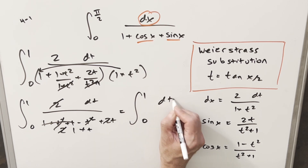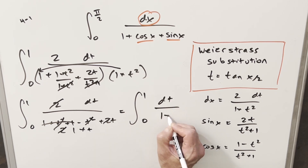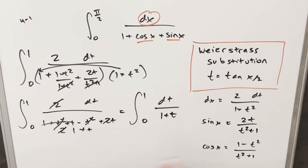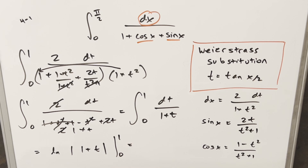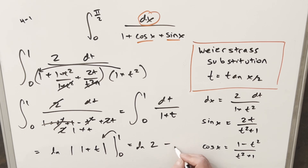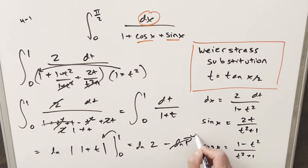So we're just integrating from zero to one of dt over one plus t. Integrating that gives us the natural log of the absolute value of one plus t. Plugging in one gives natural log of two. Plugging in zero gives natural log of one, which is zero. So all we're left with is our final answer: natural log of two.